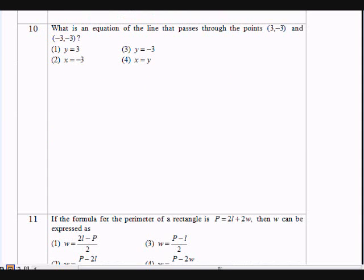Question number 10. What is an equation of a line that passes through the point 3, negative 3, and negative 3, negative 3? Okay, always remember that to solve this problem, you need to know the equation for a line. That's y equals mx plus b. Let's focus on two things right now. Let's focus on the slope and b, which is the y-intercept.